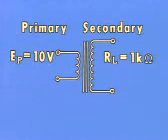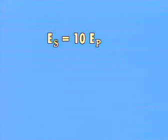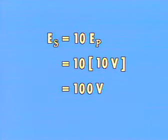Now let's add primary voltage and a load resistance of 1,000 ohms. If the primary voltage is 10 volts AC, then the secondary voltage would be 10 times 10 volts, or 100 volts AC.